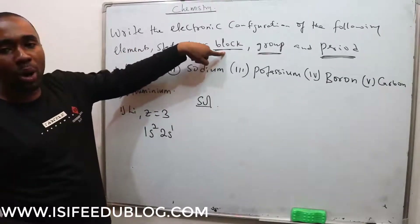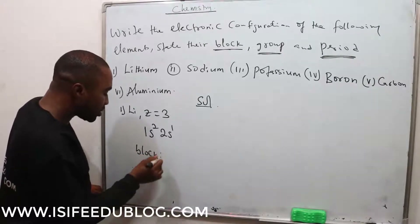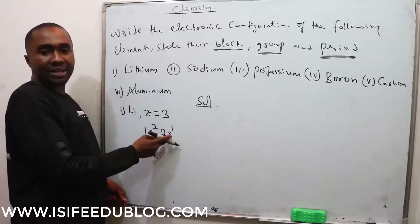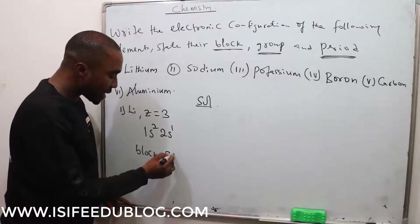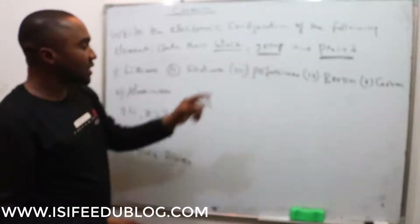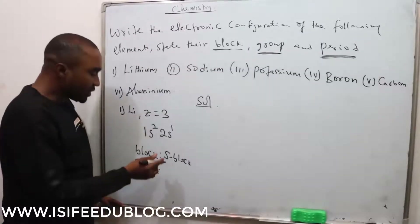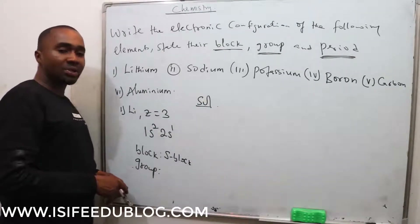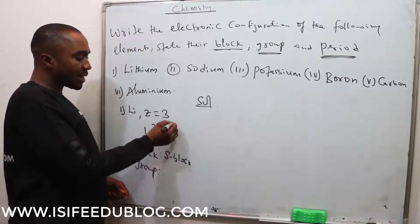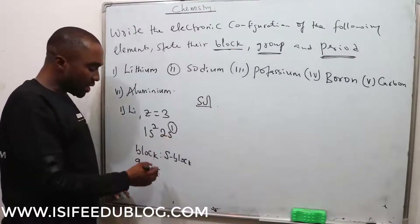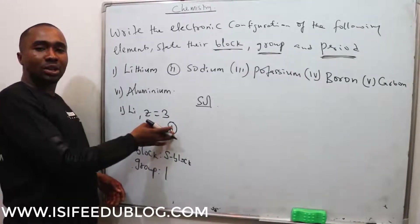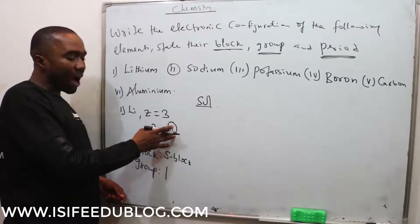The second part says I should state the block. The block of an element is where the last electron entered. The last electron here entered in the S orbital. So the block is S-block. Then, the group: for an S-block element, the group is determined by the number of electrons in the last S orbital. The last S orbital is carrying 1 electron, so the group of this element is Group 1.